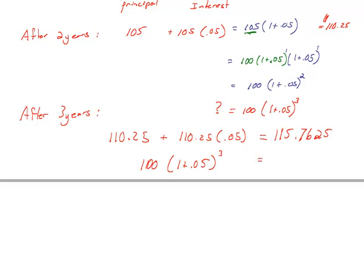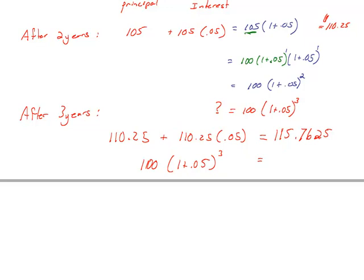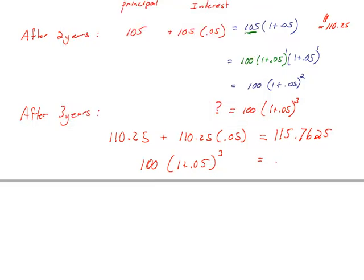So I'm comparing this now to 100 times (1 plus 0.05) cubed. Algebraically, we can show they're the same, but right now, we're just checking it. So I'm going to take 100 and multiply it by, what do I have in my parenthesis? 1 plus 0.05. And I'm cubing it. So I'm going to use this x to the y. My exponent is going to be 3. 115.7625. They're the same.